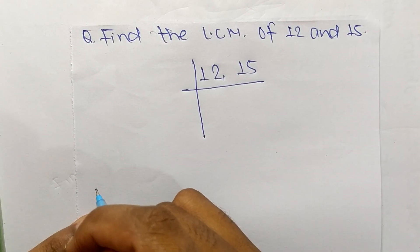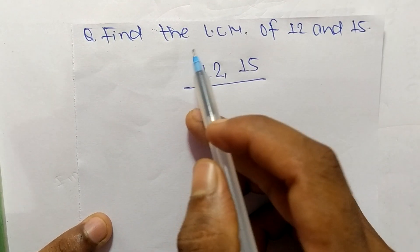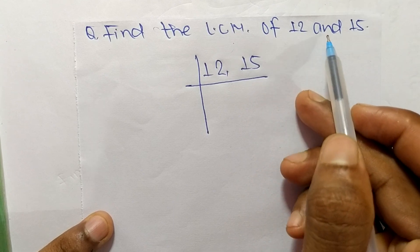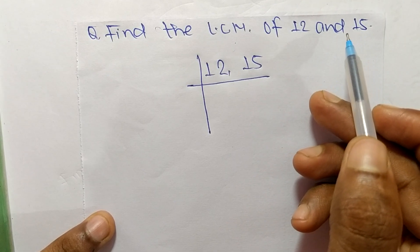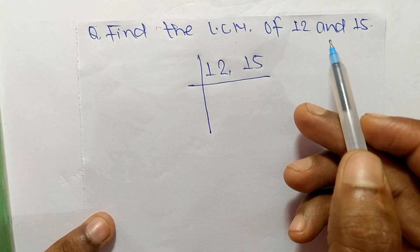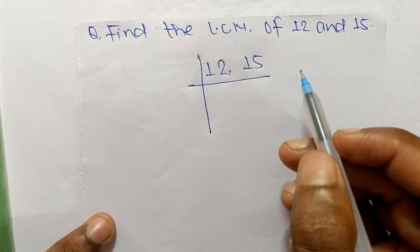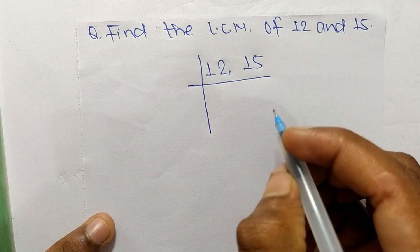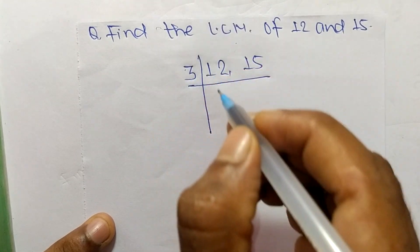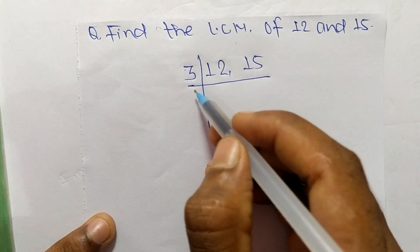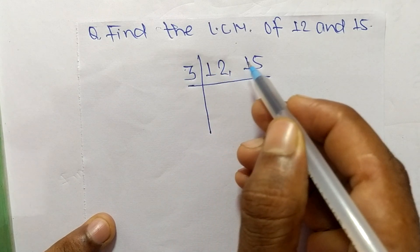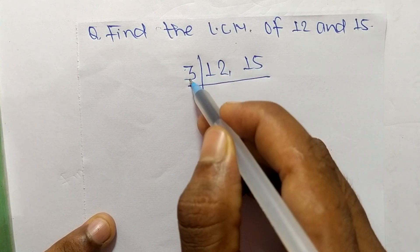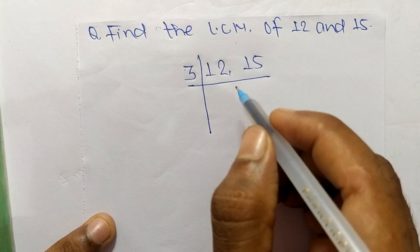So today in this video we shall learn to find the LCM of 12 and 15. To find LCM, first we choose the lowest number which can exactly divide 12 and 15. So the number is 3. If we take 2, then 2 can divide 12 but can't divide 15, but 3 can divide both numbers.